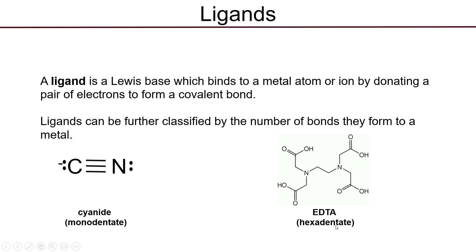The term 'dentate' comes from the Greek word for teeth, making an analogy to the ligand biting or chomping down on the metal center. So hexadentate fundamentally means EDTA can form six new covalent bonds when it binds to a metal ion, and this is key to the chemistry of EDTA titrations and how we use EDTA to determine the concentration of metals in a given sample.